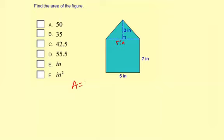So the area of the rectangle is the base of the rectangle times the height, which is 5 inches times 7 inches, which is 35 square inches or inches squared. Okay, so there's the area of the rectangle.